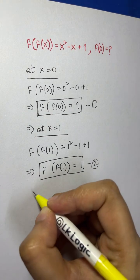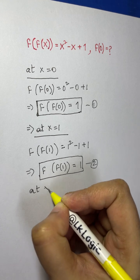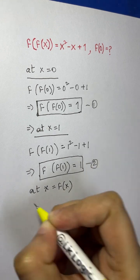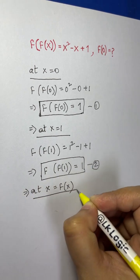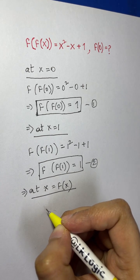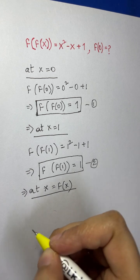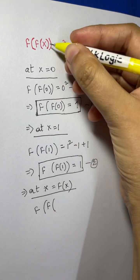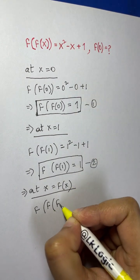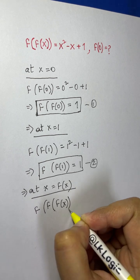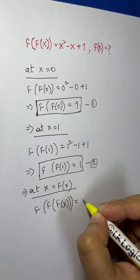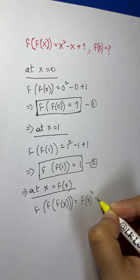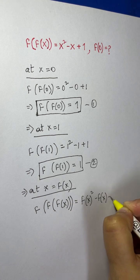Now let's see what happens when we substitute f(x) in place of x. We get f(f(f(x))) = [f(x)]² - f(x) + 1.